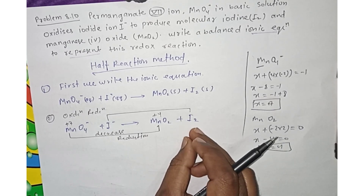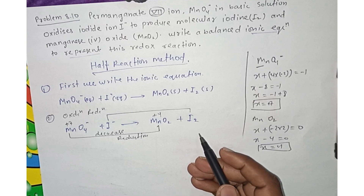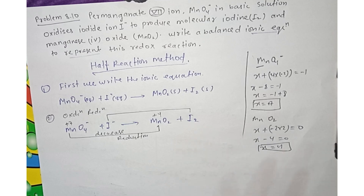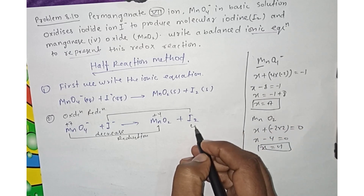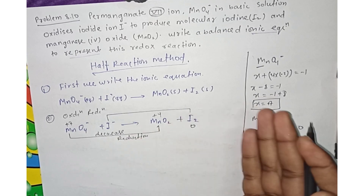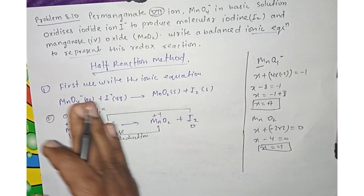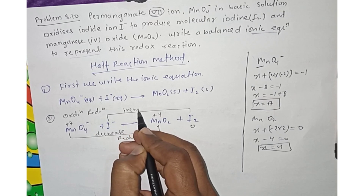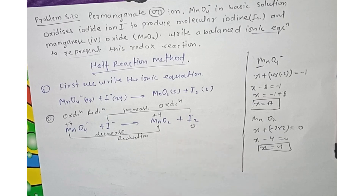I2 is in a free state — it is a single element, so it always has an oxidation value of zero. I⁻ has a value of minus 1, and I2 has a value of zero. So iodine goes from minus 1 to zero — that is an increase, meaning iodine is oxidized. The change in oxidation state is 2.